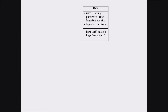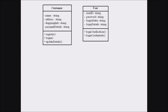Next we are considering the Customer class. The customer also has different attributes and methods. The attributes include name, address, shipping information, and payment details. The different methods associated with the Customer class are register, login, and update details. Here also the attributes are private and the methods are public.